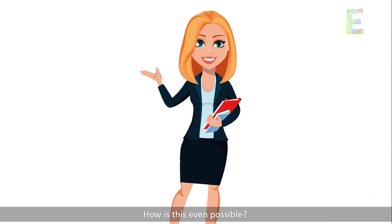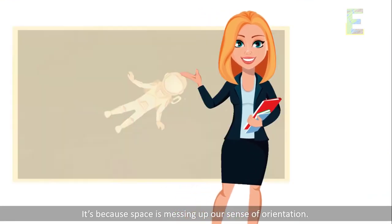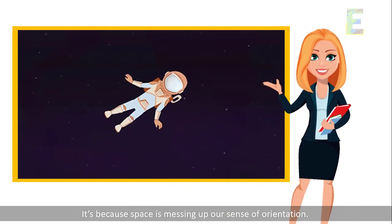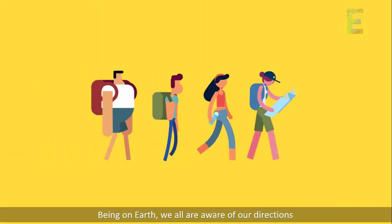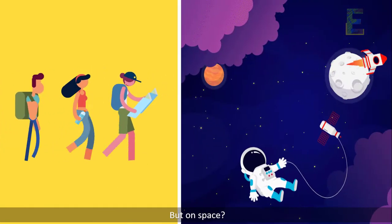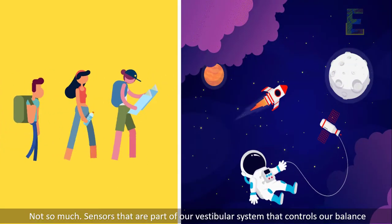How is this even possible? It's because space is messing up our sense of orientation. Being on Earth, we all are aware of our directions. But in space, not so much.